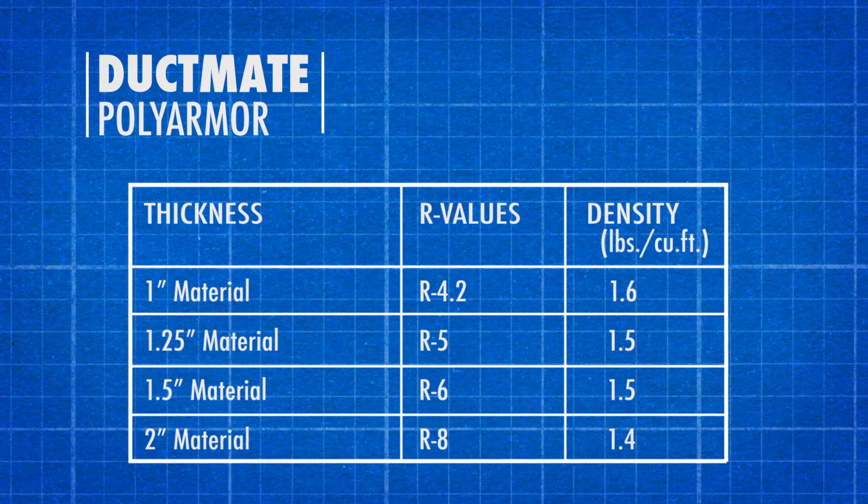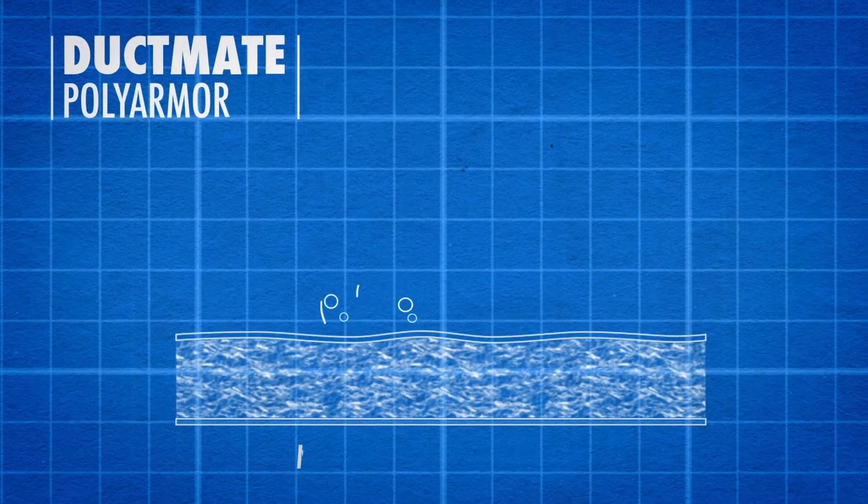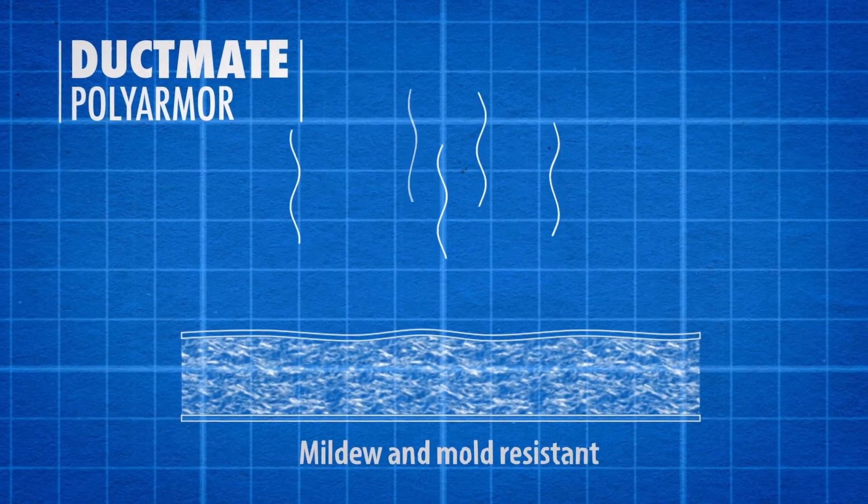PolyArmor duct liner is hydrophobic and does not promote the growth of mildew and mold, maintaining excellent indoor air quality.